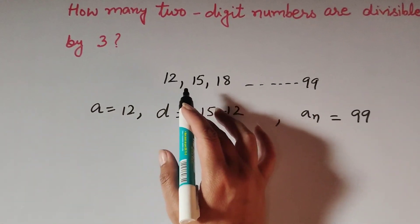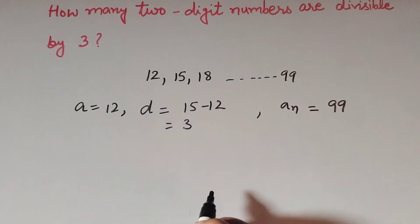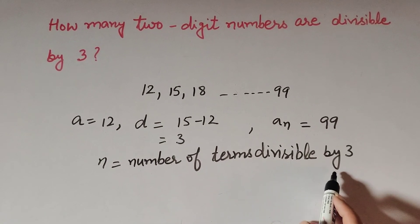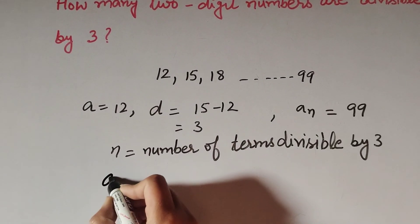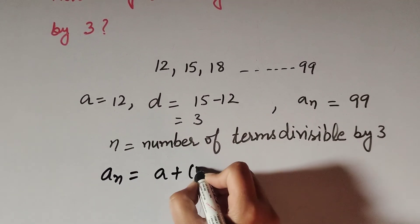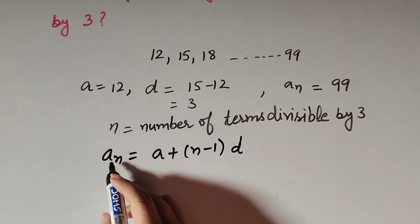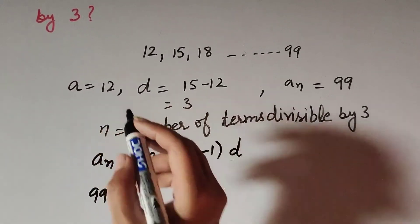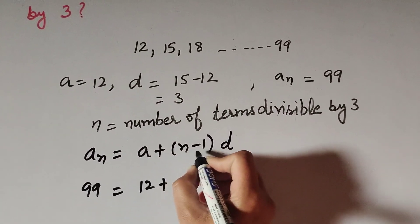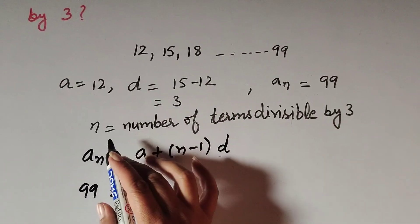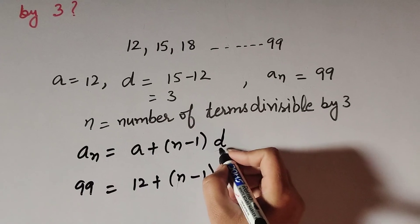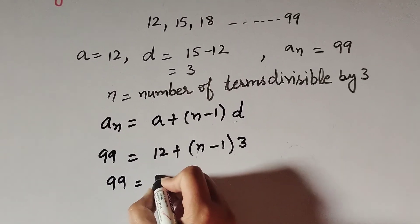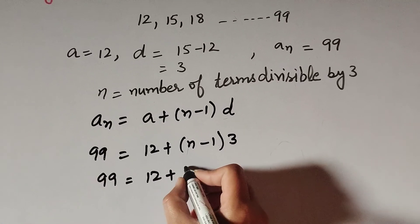Now we find the total number of terms divisible by 3. Suppose n is the total number of terms. We use the formula for the last term: aₙ = a + (n − 1)d. Here aₙ is 99, a is 12, and d is 3. So: 99 = 12 + (n − 1) × 3.